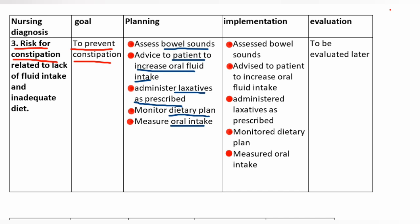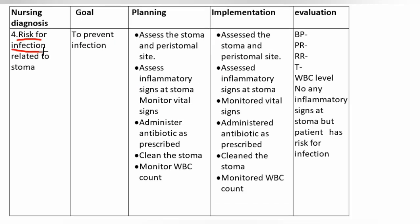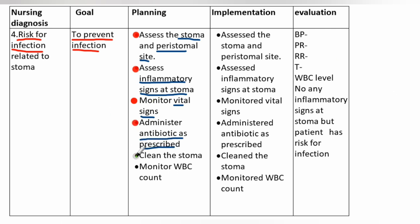Nursing diagnosis number four: risk for infection related to stoma. Goal: to prevent infection. Planning: assess the stoma and periostomal site, assess inflammatory signs at the stoma, monitor vital signs, administer antibiotic as prescribed. Implementation: assess inflammatory signs at the stoma, monitor vital signs, administer antibiotic as prescribed.